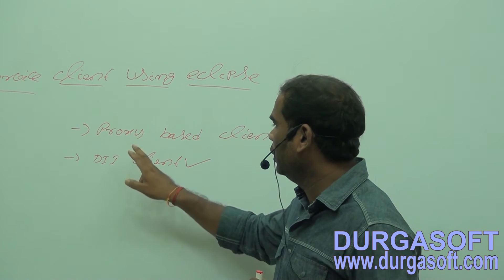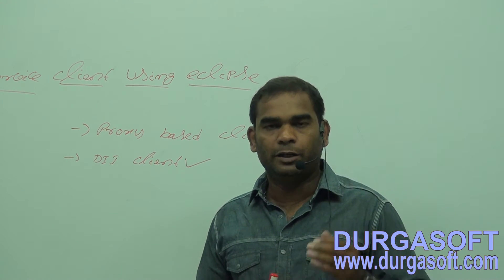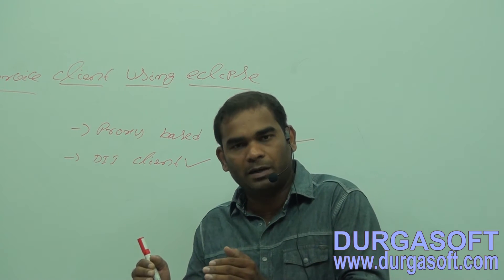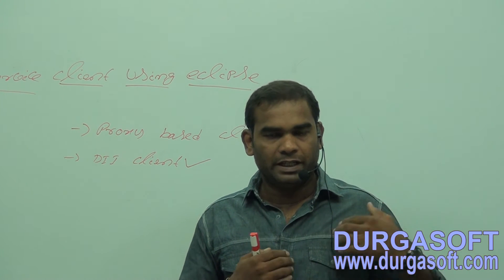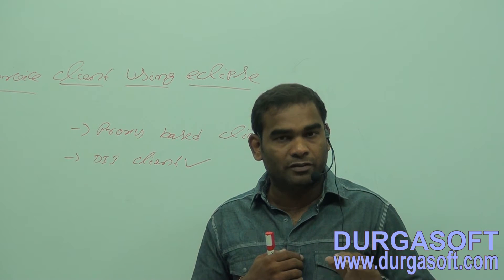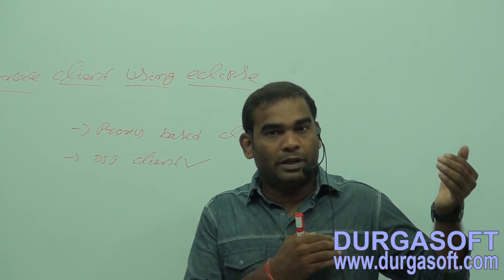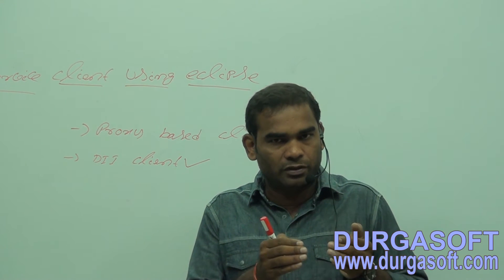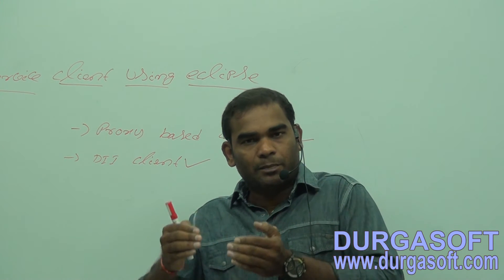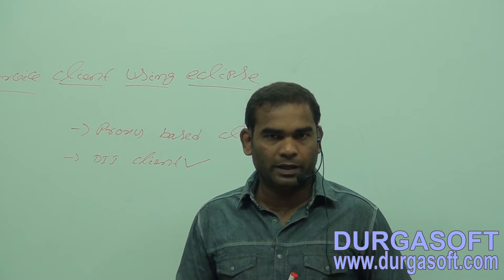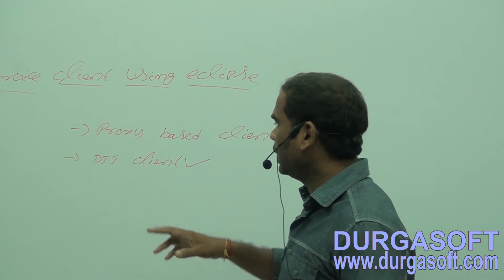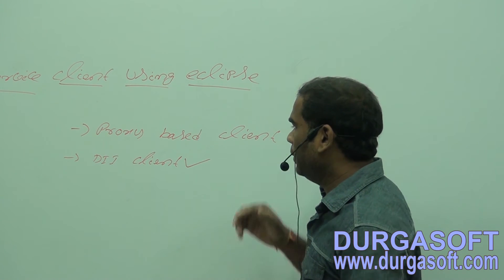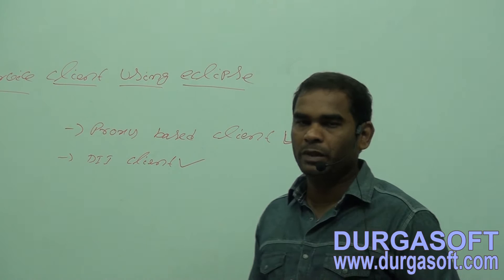In a proxy-based client, the client generates the stubs and uses them in his application to invoke the web services. In a DII client, the client never generates stubs; instead, the web service implementation provider provides some set of classes acting as stubs, and the client uses those in the application to invoke the web services. We will discuss the differences in more detail later.